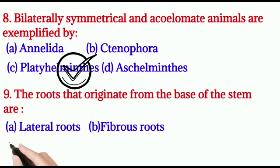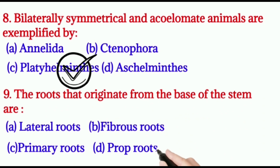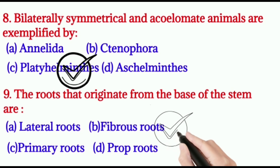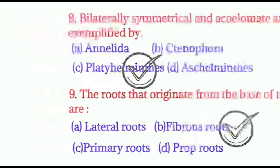Question number nine: the roots that originate from the base of the stem are — A: lateral roots, B: fibrous roots, C: primary roots, D: prop roots. The right option is B, fibrous roots. Fibrous roots originate from the stem.